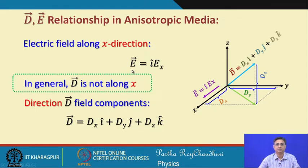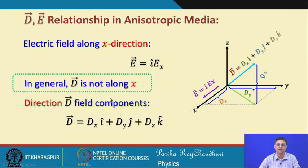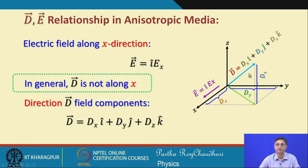Suppose the electric field is incident along the x-axis, so E = î·Ex with no y or z component. In that case, D is not along the x-axis in general, and the displacement vector will be represented as D = dx·î + dy·ĵ + dz·k̂. There will be three components excited because of this incident electric field, which are in general not along the x-axis.